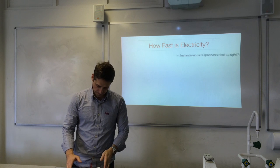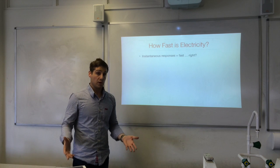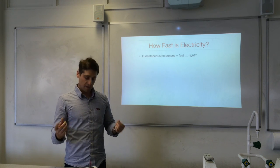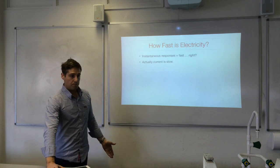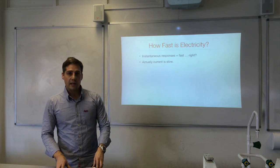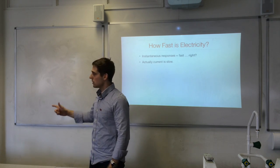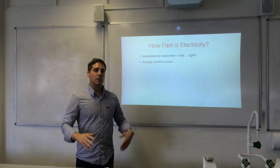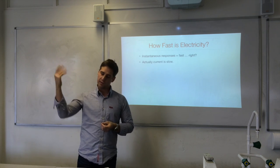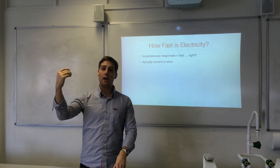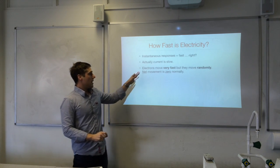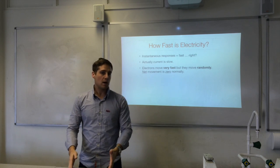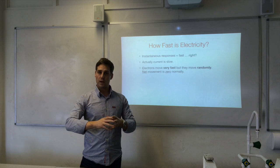How fast is electricity? If I flick a light switch, I get an almost instantaneous response. Does that mean the flow of charge is very fast? Actually, current is slow — it does not move very fast. The instantaneous response to turning on a light switch is due to a net drift of charged particles — the electrons — starting around the whole circuit. Electrons do move very fast, hundreds of metres per second in metals even when there's no current flowing, but they move randomly so there's no net movement.